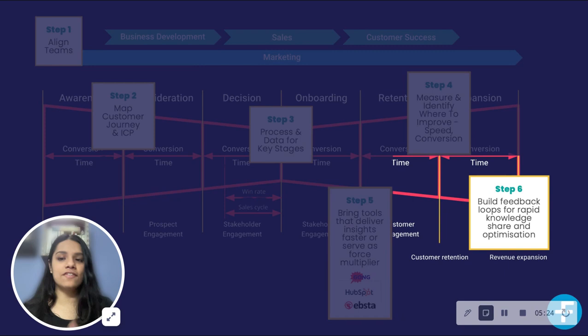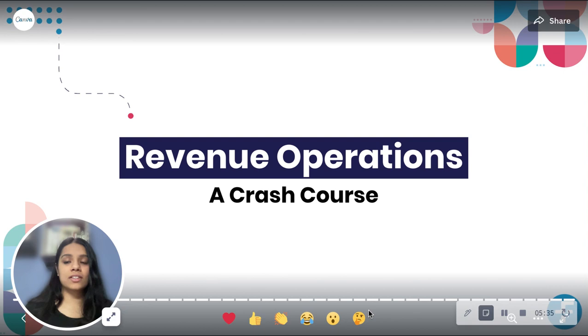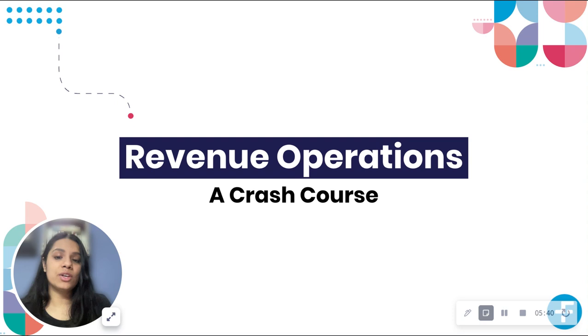The last step: build feedback loops for rapid knowledge sharing and optimization. Encourage openness and knowledge transfer within your team. While you may not be able to address every suggestion immediately, early identification allows for timely optimization, fostering success in both the short and long term. Whether you're a seasoned professional or just starting out, understanding RevOps can be a game changer for your organization. If you found this video helpful, don't forget to hit the like button and comment below if you have any questions related to RevOps.